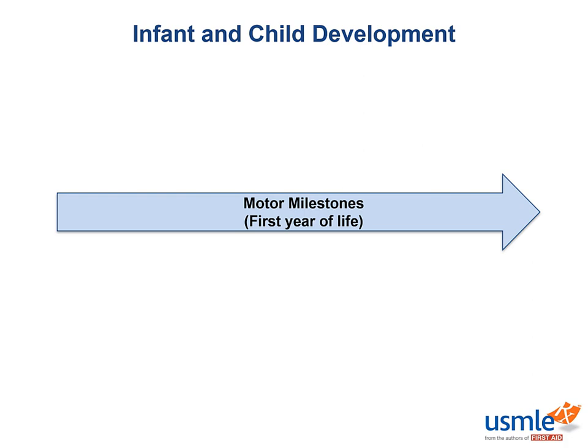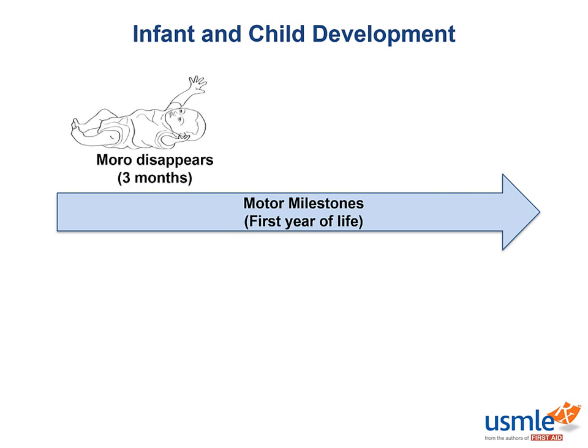Motor milestones in the infant age group include the child abandoning the primitive reflexes which they are innately born with. First up we have the Moro reflex, which disappears by three months. The Moro reflex is seen when you pull an infant up slightly and then release them. They first spread their arms, then pull the arms in as if reaching out for something. This is usually accompanied by some crying.